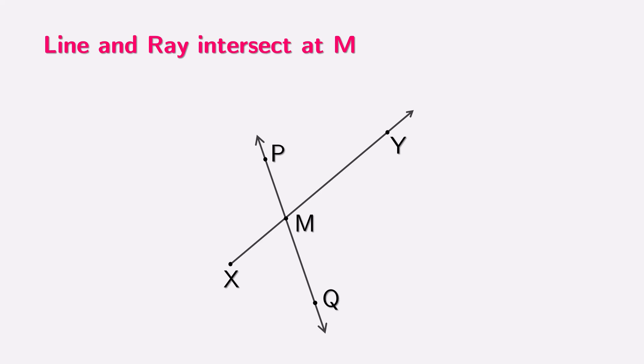Let's examine the figure on the screen. Here we see ray XY and line PQ intersecting at point M. Notice that ray XY starts at X and passes through Y, while line PQ extends infinitely in both directions. The key here is that both the ray and the line cross each other at point M. This is an important example of how rays and lines can interact in geometry.